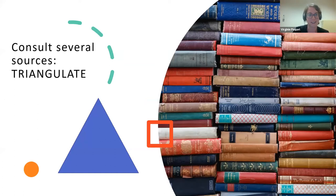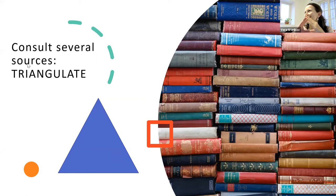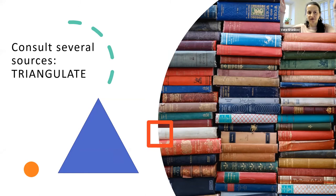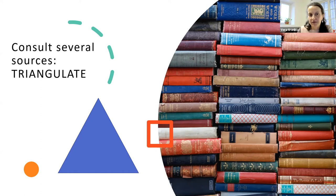Just to add to the idea of triangulation: try to look for different types of sources. That's even more valuable — if you've consulted three different sources, maybe one from Public Health Canada, one from Osteoporosis Canada, and one from a doctor's personal website that references new scientific studies, and they all agree, that signals it's more likely to be reliable.